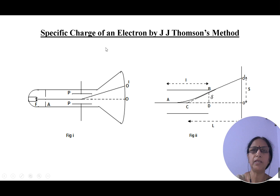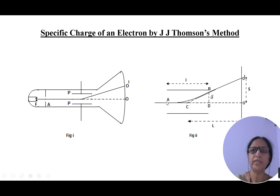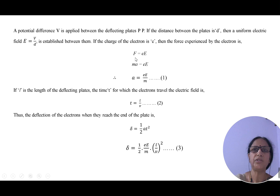Specific charge is the ratio of the charge of an electron to its mass. To calculate the shift, we consider the force experienced by the electron due to the electric field: F = Ee, where E is the strength of the electric field and e is the charge on the electron. Writing F = ma, we get the acceleration attained by the electrons within the plates as a = eE/m — equation number 1.